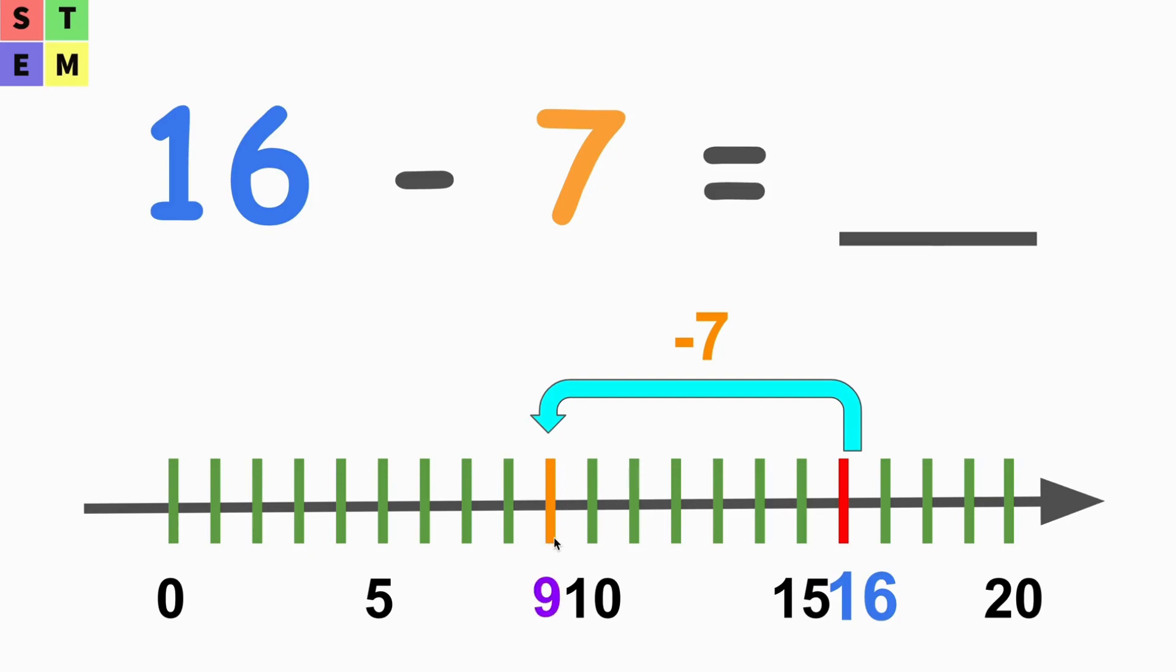Right, how do we get it? So we got 10 here, and that's 1 less than 10, right? That's how we get it. That's why we got 9. So from the number line we can easily tell that 16 minus 7 equals 9.